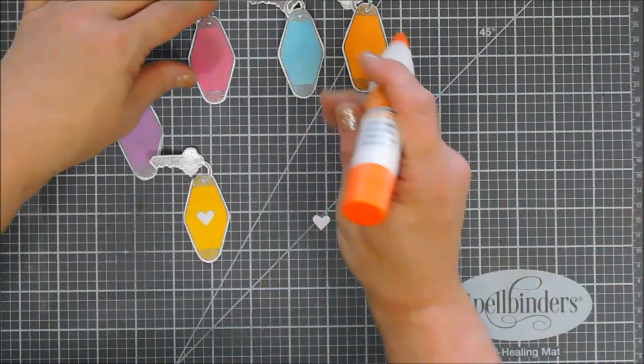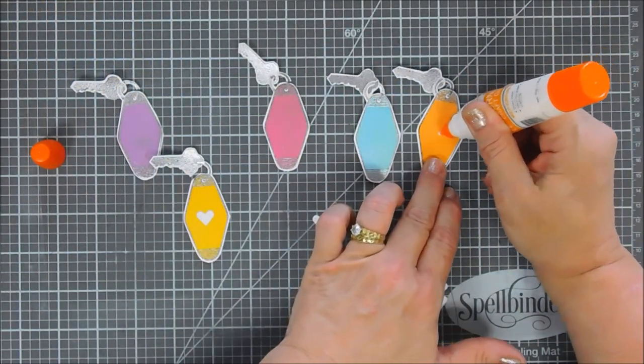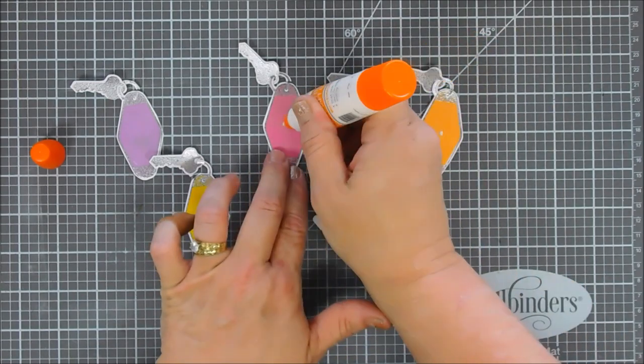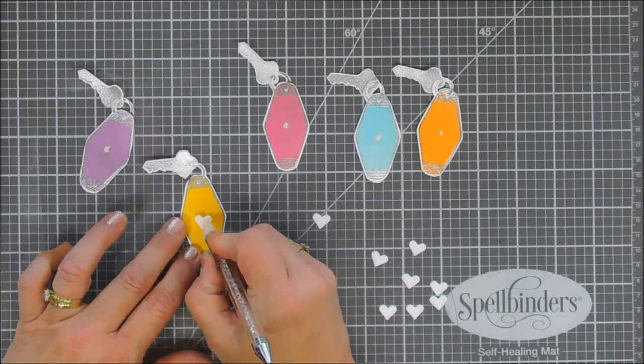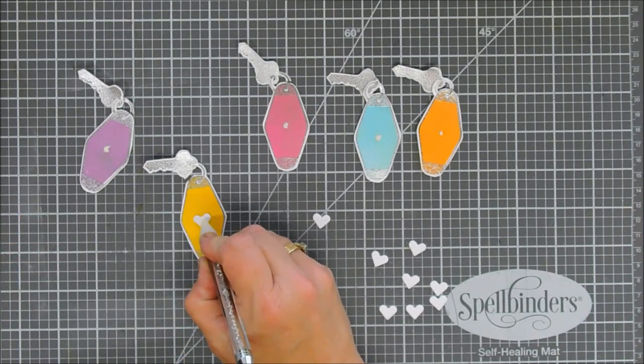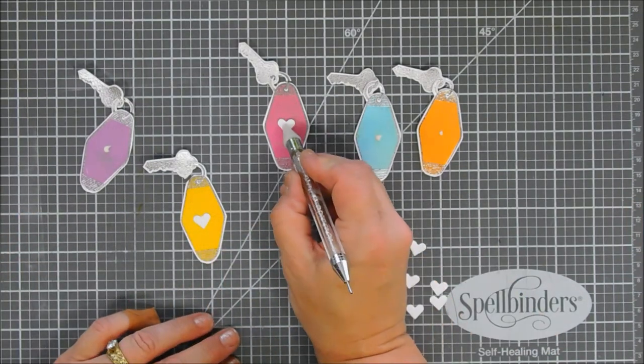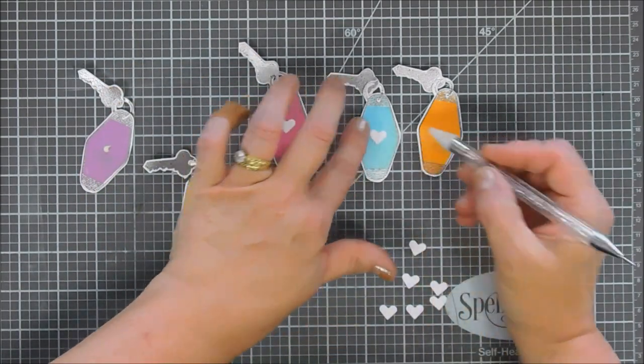We're going to add glue first right in the center and then we're going to just use our jewel picker and place each one of our hearts down the middle. Easy peasy to do so far and I love the outcome.